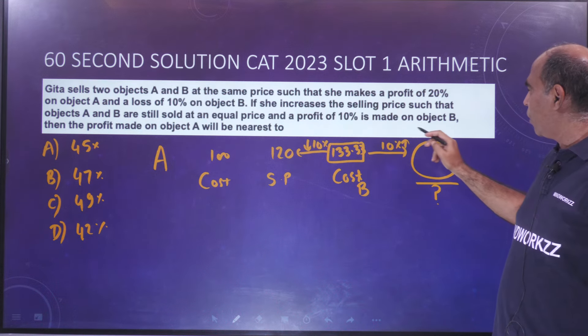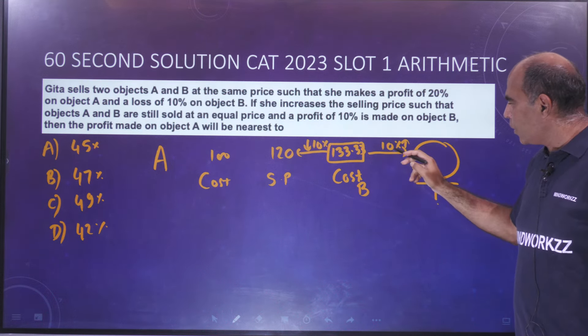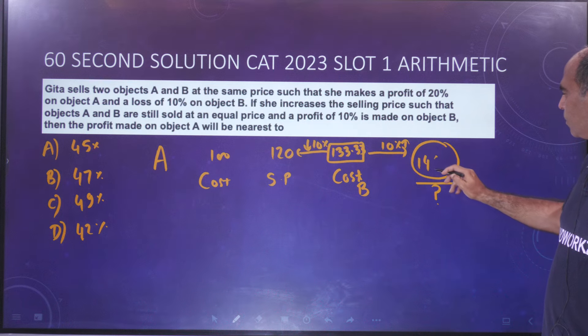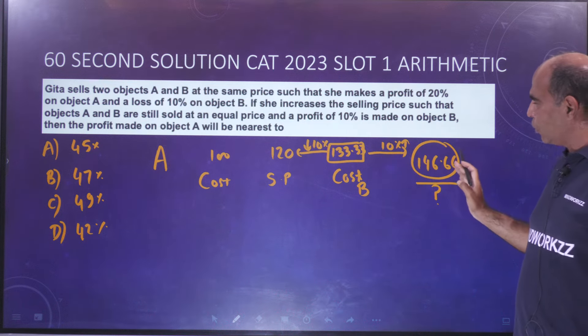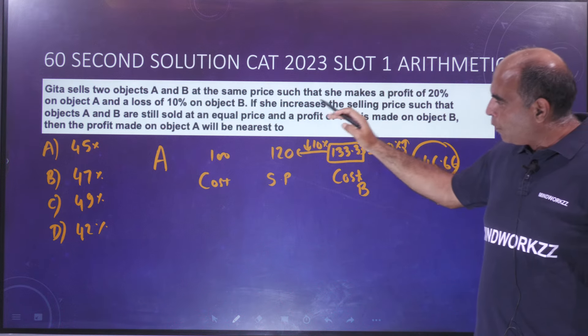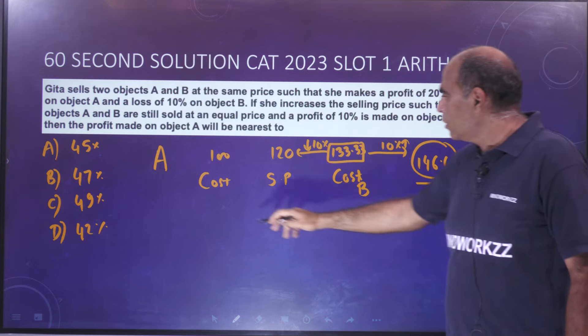So 133.33, 10% profit, that means it's being sold at 146.66. A and B both are being sold at this. The profit made on object A will be nearest to...